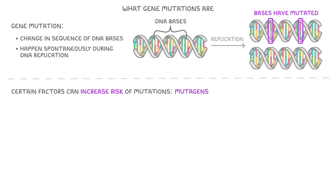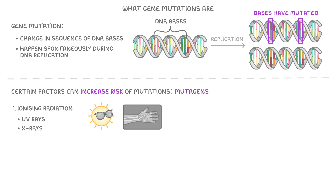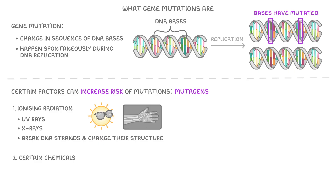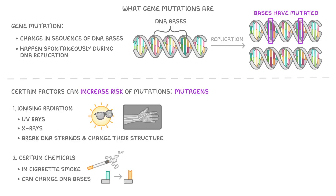Mutagens can come in multiple different forms. One example is ionising radiation, like UV rays from the sun or X-rays. Ionising radiation can break DNA strands and change their structure. Certain chemicals can also act as mutagens — a good example is cigarette smoke, as the chemicals in the smoke can change your DNA bases.